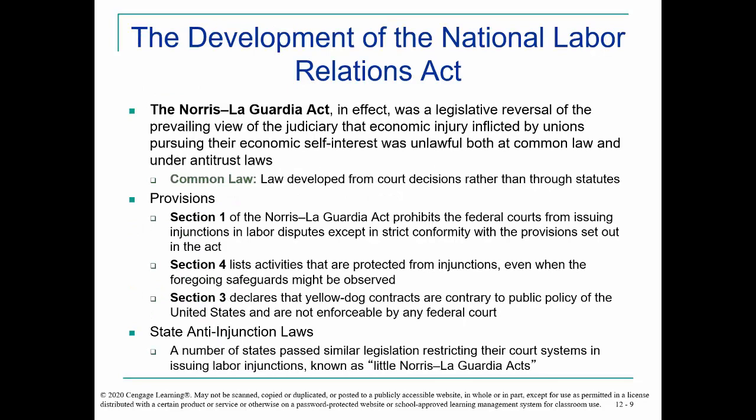That gets us to the development of the National Labor Relations Act and the Norris-LaGuardia Act, which was really a legislative response to judicial actions. Under common law, the law develops through court decisions instead of through statutes. The important provisions here are sections one, three, and four. Section one says federal courts cannot issue injunctions in labor disputes beyond the very strict language of the act itself. Section three says yellow dog contracts are contrary to public policy and not enforceable by federal court. Section four lists activities that are protected from injunctions.